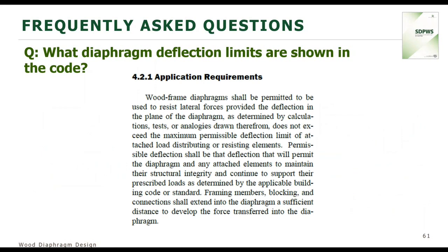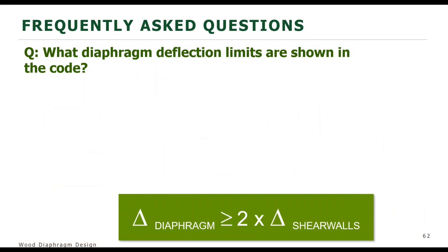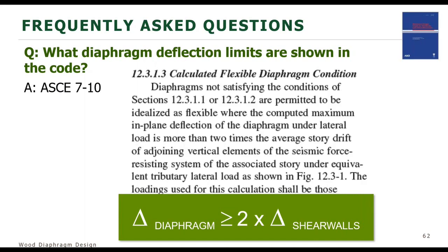ASCE 7 has information on flexible and rigid diaphragms. There are two ways to determine if you have a flexible diaphragm. The calculated approach: if the deflection of the diaphragm is greater than two times the shear wall drift, you can idealize the diaphragm as flexible — per ASCE 7 section 12.3.1.3. If flexible, load is transferred to shear walls by tributary area (simply supported assumption). There's also a prescriptive approach for determining a flexible diaphragm.